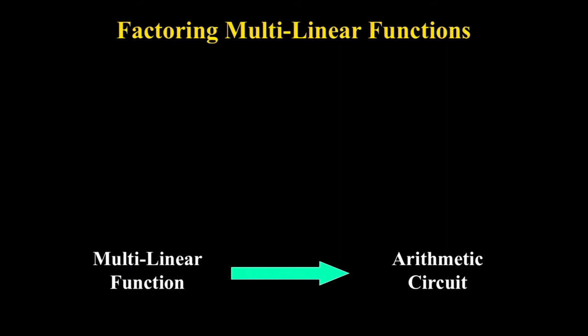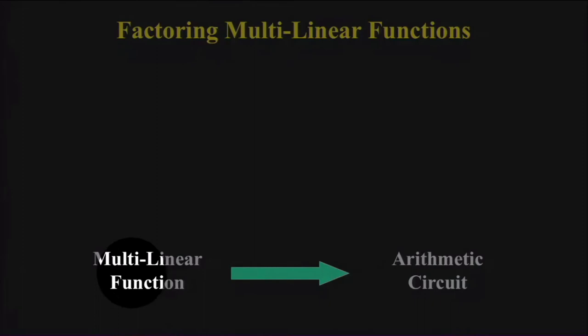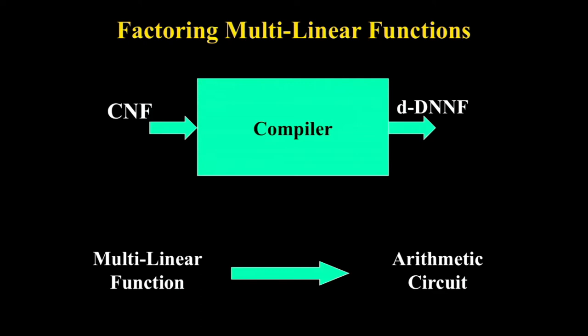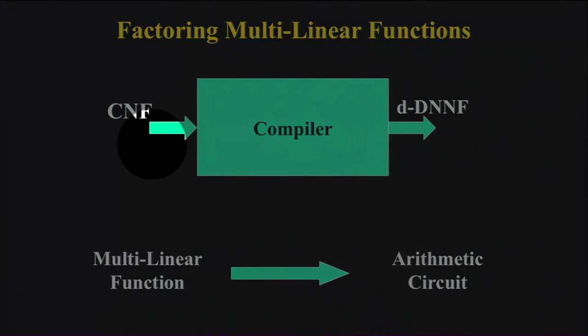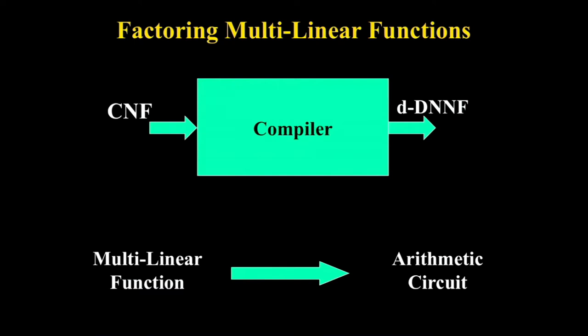Here's how the reduction works. What we really want is: given a multilinear function — a polynomial — produce an arithmetic circuit for it. This polynomial is exponentially large. The box we'll use is a compiler, or knowledge compiler, in logic. It takes a Boolean formula in CNF — conjunctive normal form — and gives back a Boolean circuit called a d-DNNF: deterministic decomposable negation normal form.